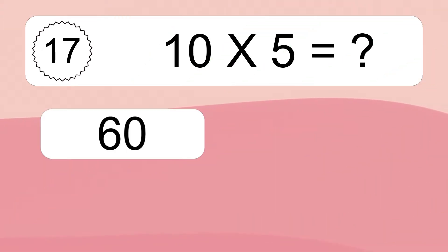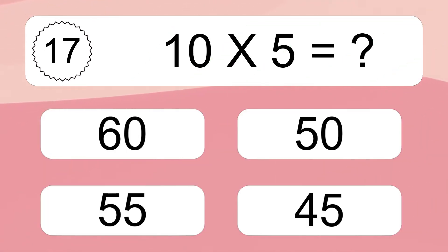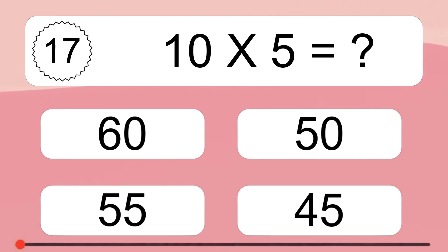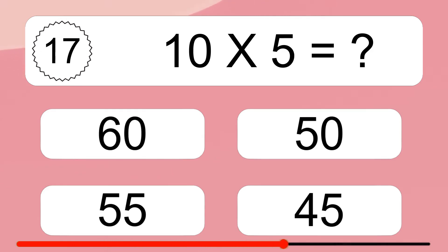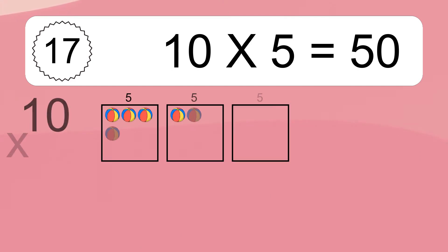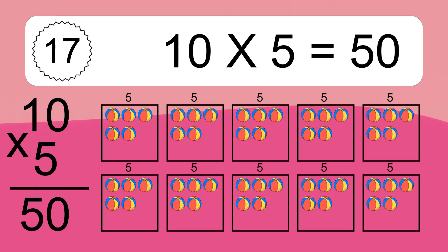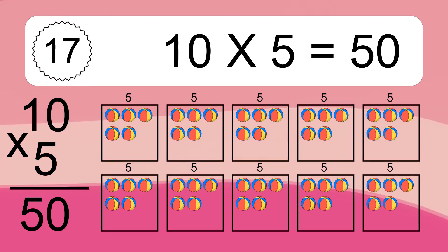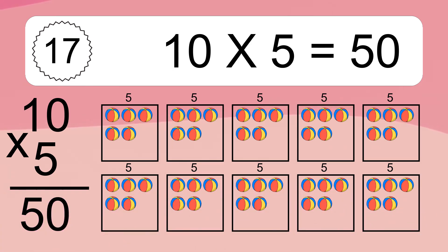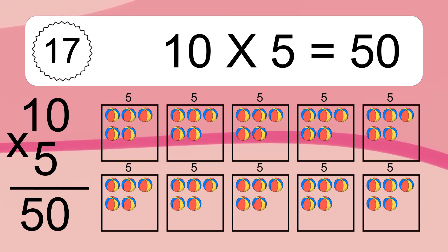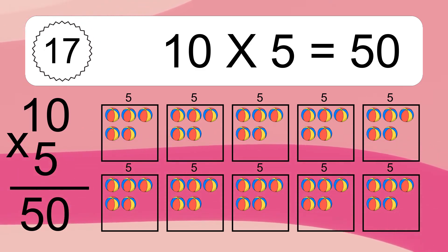10 times 5 equals what? 10 times 5 equals 50. We have 10 boxes and each box has 5 colorful balls inside. If you count all the balls in all the boxes together, you will have 10 times 5 balls. This equals 50 balls.